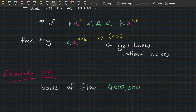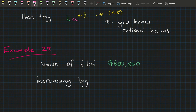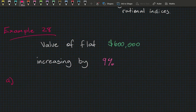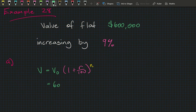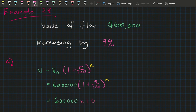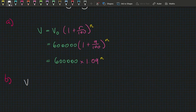Example 28: Zoe has a flat valued at $600,000, and prices in her area are increasing by 9% per year. Part A — determine the value in n years. Using the growth formula: V = V₀ × (1 + r/100)^n, substituting gives V = 600,000 × (1 + 9/100)^n = 600,000 × 1.09^n.